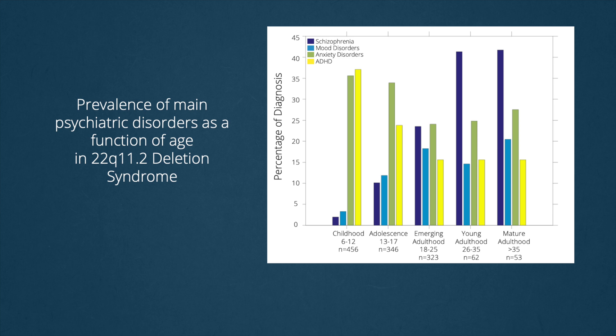The same study also suggested that the prevalence of psychotic disorders strongly increases with age in 22Q. As you can see in this graph, the prevalence of psychosis was only approximately 2% among children, but increased to 10% among adolescents between 12 and 18, and to a further 23% among young adults. After the age of 25, the risk of psychosis remained relatively stable between 30 and 40%. These findings suggest that the transition between late adolescence and early adulthood is a critical period of vulnerability to psychosis in 22Q, which may be related to mechanisms of atypical brain development specifically during adolescence.